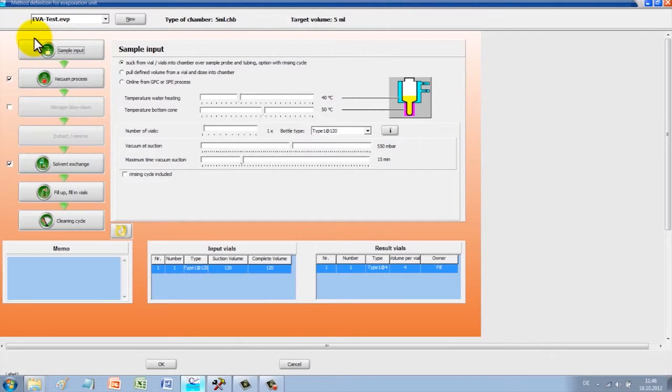How do you set up a method quickly? The method is predetermined within the structure and divided into sample loading, vacuum process, blowing off with nitrogen, removal, solvent exchange, filling, and cleaning.